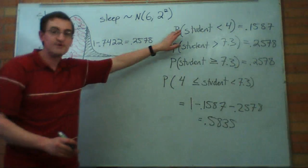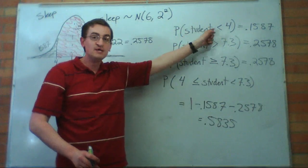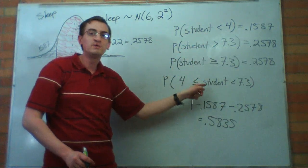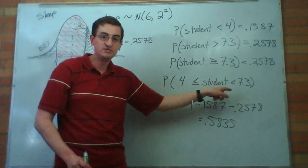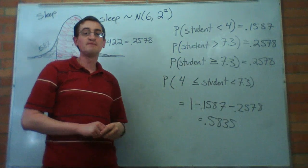So, this is how you can find probabilities given a value, either less than, greater than, we don't care about the equals, or even an area in between. Next time, we'll talk about going backwards.